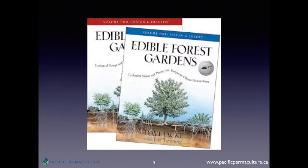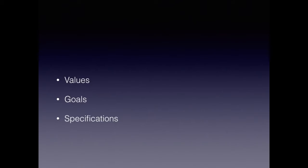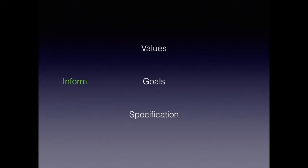This process is borrowed from Edible Forest Gardens, Volume 2, by Dave, Jacke, and Aaron Stoncmeyer. They originally framed it as values, goals, and criteria. I think criteria is not the appropriate term because it's too broad. I've changed it to specifications because I want specific answers, and as we go through this, you'll see why that last step matters.